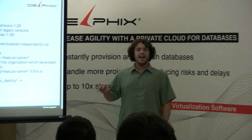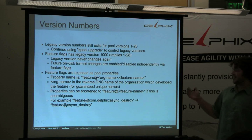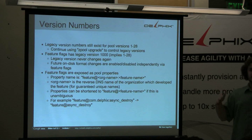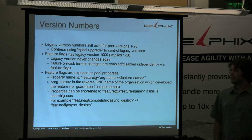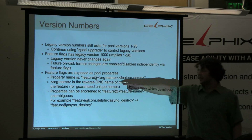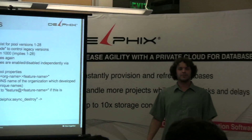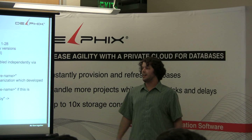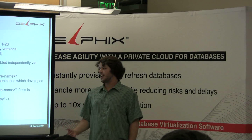These flags are going to be exposed as pool properties. The property name is going to be somewhat lengthy — you'll see "feature@" and then an organization name and then the feature name, similar to how you see user properties with the @ symbol on datasets. This is to ensure that two organizations don't independently develop a feature with the same name, which is plausible. The user interface will always abbreviate that as long as it's not ambiguous.